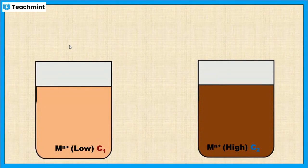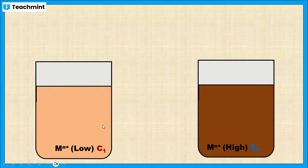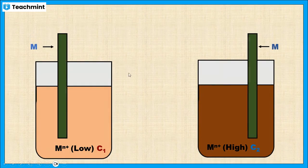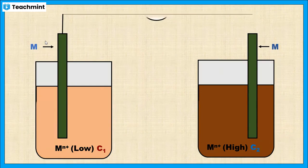Let us see the construction of the concentration cell. It contains two electrolyte solutions having different concentrations — one is low and the other one is high — immersed with two identical electrodes, M. These two electrodes are connected via a voltmeter and a salt bridge.